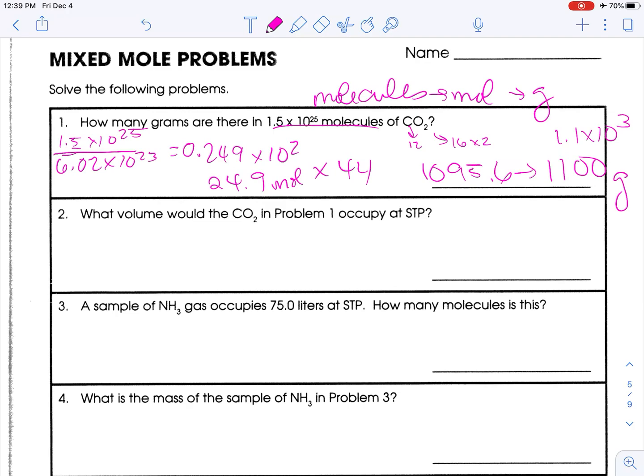What volume would the CO2 in problem 1 occupy at STP? Remember, STP is just normal conditions, and you have to be at STP in order for your 22.4 liters to be accurate. So I don't need to start from scratch. I can just start from my moles, which are 24.9 moles. I need to go to volume, so I'm going to multiply by 22.4. So 24.9 times 22.4 gives me 557.76 liters, or 560 liters with sig figs.